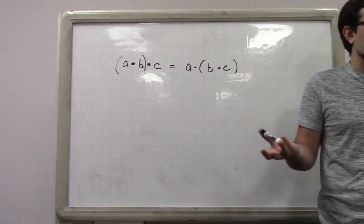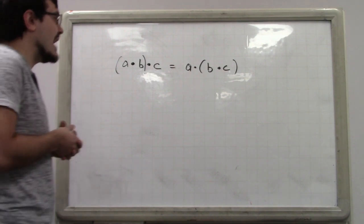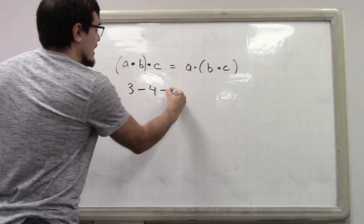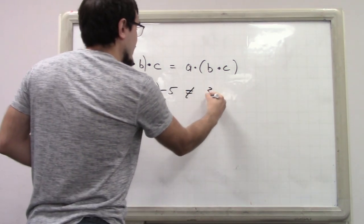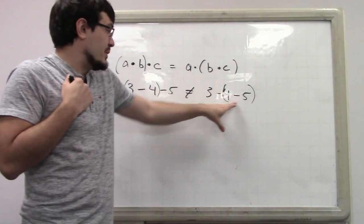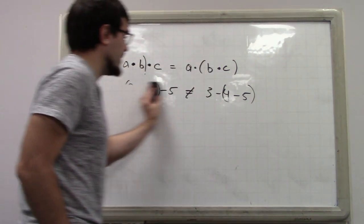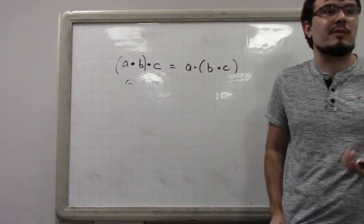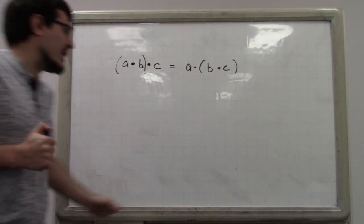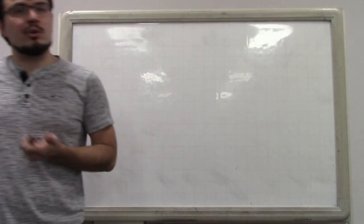A super easy example of non-commutativity is subtraction: 3 minus 7 is not the same as 7 minus 3. Subtraction is also technically not associative, because A minus B minus C is not the same as A minus B minus C with different grouping — for example, that gives minus 6 in one case and 4 in another. If we ever need subtraction in segment trees, we just deal with negative numbers and use addition, which has all these properties.